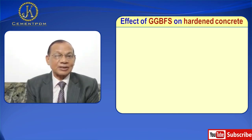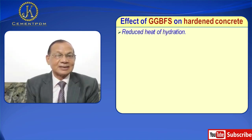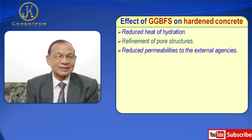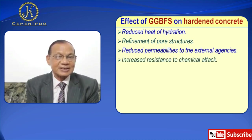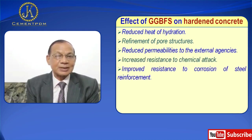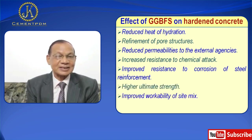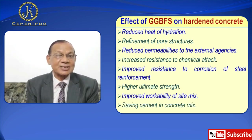Effects of ground granulated blast furnace slag on hardened concrete: reduced heat of hydration, refinement of pore structures, reduced permeability to external agencies, increased resistance to chemical attack, improved resistance to corrosion of steel reinforcement, higher ultimate strength, improved workability of site mix, and saving of cement.